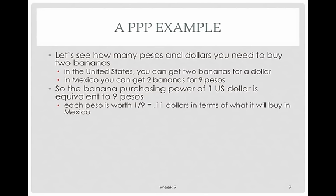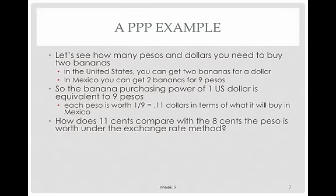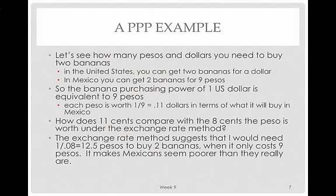According to this, each peso is worth one-ninth of a dollar, because for every dollar you need nine pesos. That means each peso is worth about 11 cents in terms of what it will buy in Mexico. Compare that to the exchange rate method: instead of looking at what you can buy, we looked at what you need to buy something. Under the exchange rate at 8 cents per peso, you would need 1 divided by 0.08, or 12.5 pesos, to buy two bananas — but it only costs 9 pesos. So the exchange rate method makes Mexicans seem poorer than they really are.